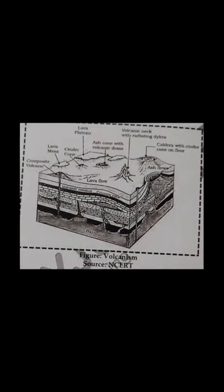Volcanism: a volcano is a vent or fissure in the crust through which hot gases, molten lava, mud flows, rock fragments, and ash erupt outward from the interior of the earth. Volcanoes are located on or near plate boundaries. Subduction zones around the Pacific Rim have significant volcano activity — aptly named the Pacific Ring of Fire. Mid-oceanic ridges (divergent plates) and certain hot spots also generate volcanic activity.